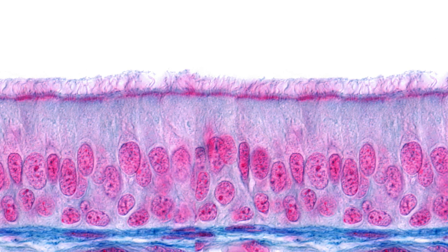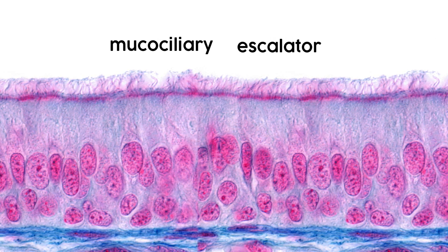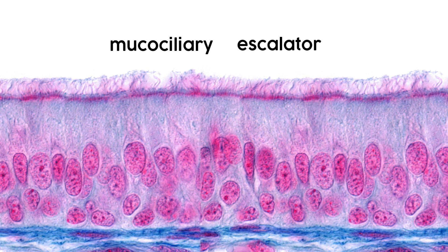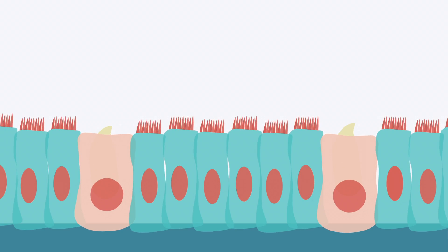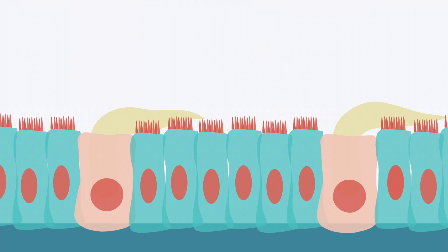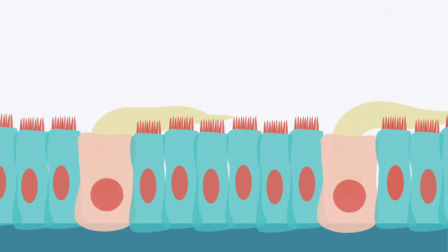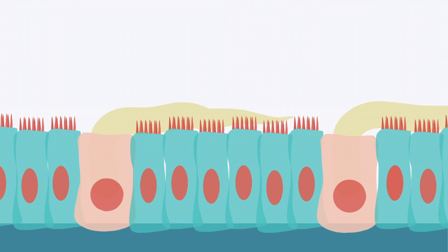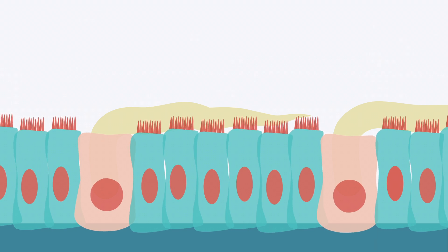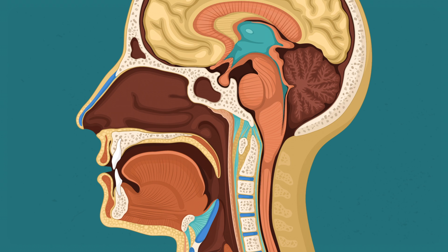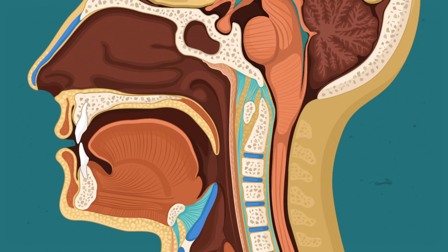Those cilia can move and beat back and forth, driving something called the mucociliary escalator — a strategy for getting gunk out of the lungs. Cells like goblet cells will pump out mucus, which traps any kind of debris or dust. Then the cilia move it upwards into the pharynx so it can either get swallowed down the esophagus or coughed up. We need those cilia to move around mucus.